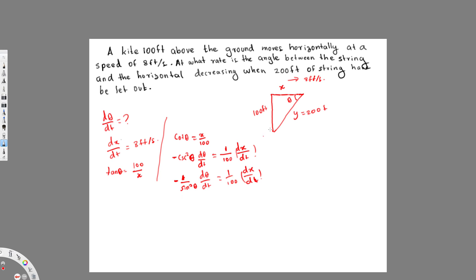Now we substitute values. We can find sin θ: it is opposite over hypotenuse. The opposite side is 100 and the hypotenuse (string length) is 200, so sin θ = 100/200 = 1/2. Isolating dθ/dt, we get: dθ/dt = (1/100) · (dx/dt) · (−sin²θ). Substituting dx/dt = 8 and sin²θ = (1/2)² = 1/4.